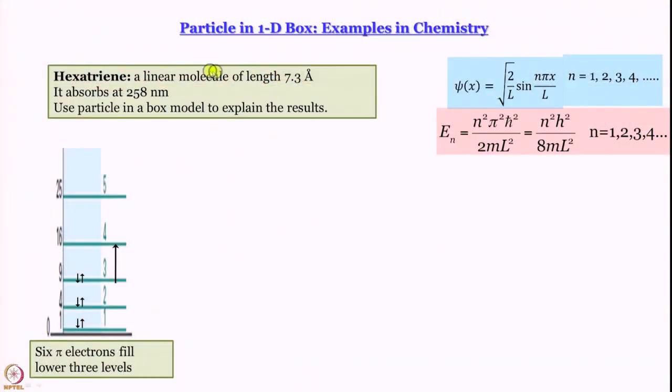The first example we want to discuss is hexatriene, a conjugated molecule which is linear. You can draw a line from beginning to end and the length is 7.3 angstrom. Hexatriene absorbs at 258 nanometers if you look at the absorption spectrum.